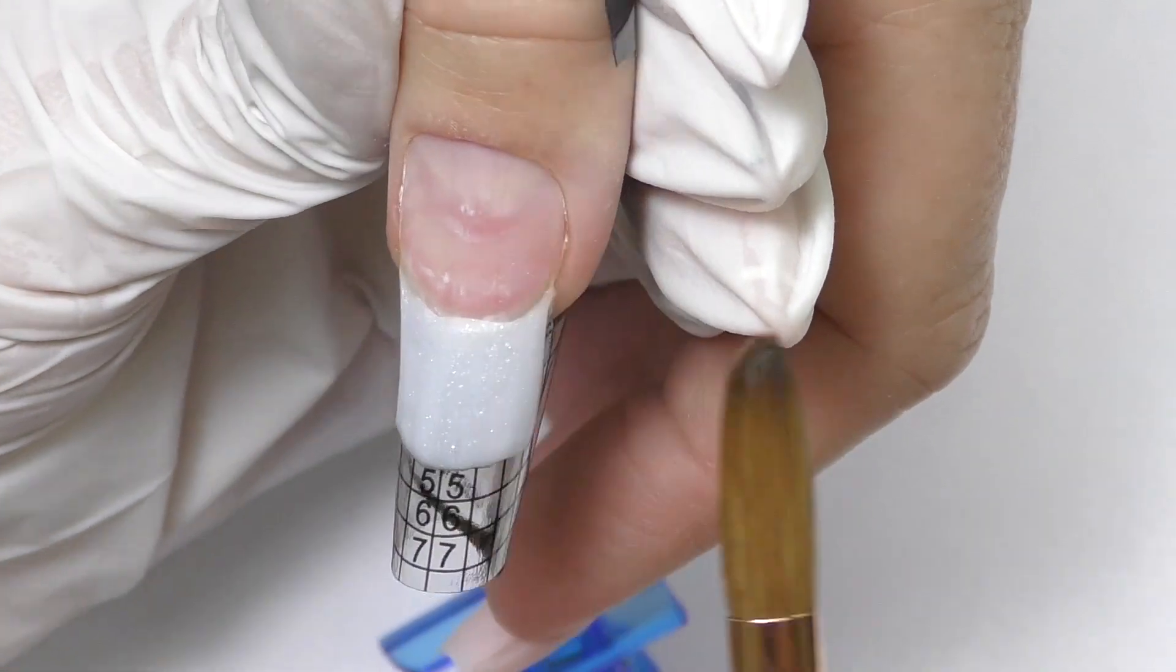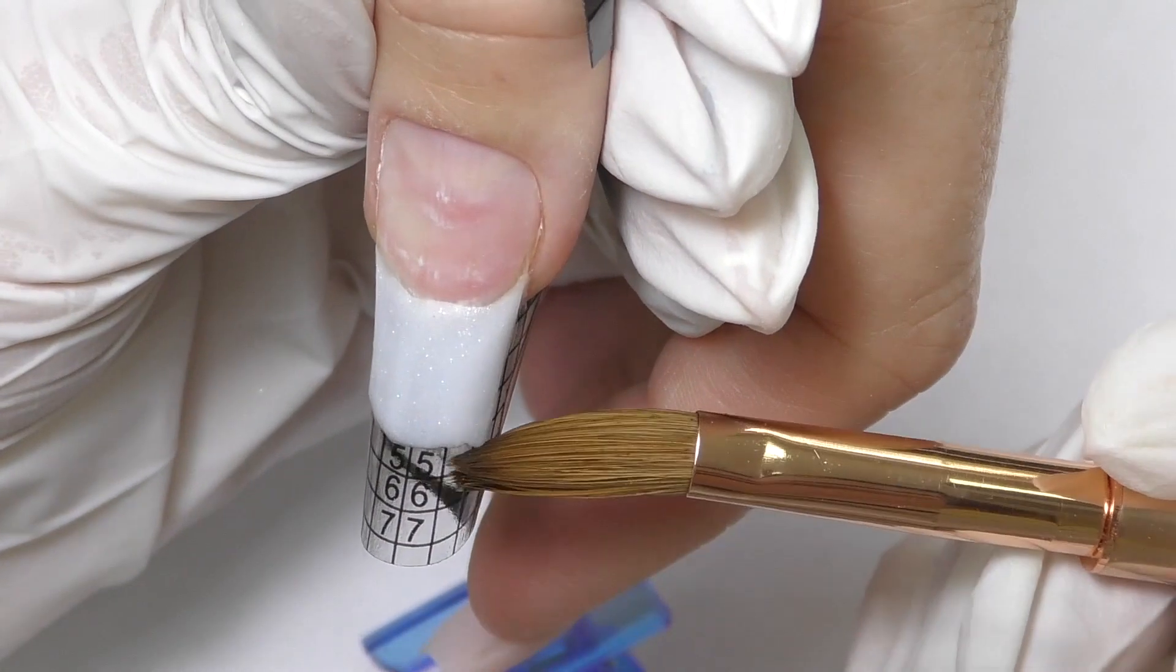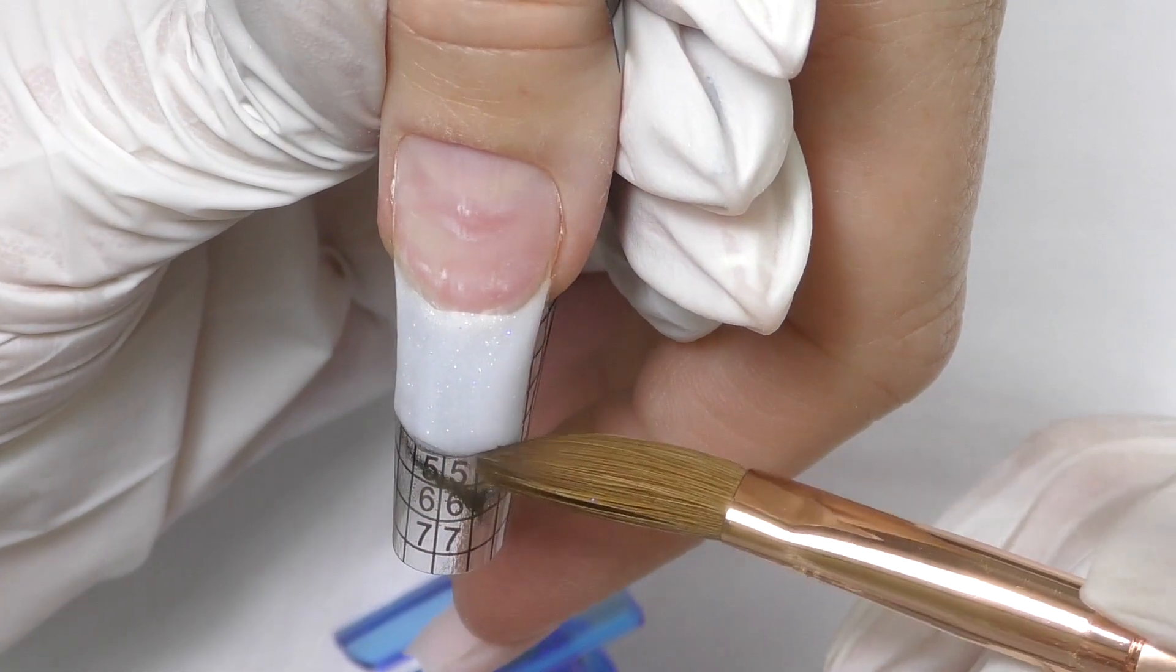So first I create the free edge. I decided to do it a little rounded on the free edge area so make sure that the surface is completely smooth and even.